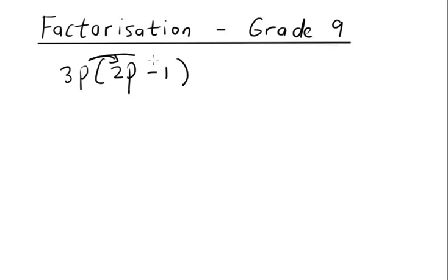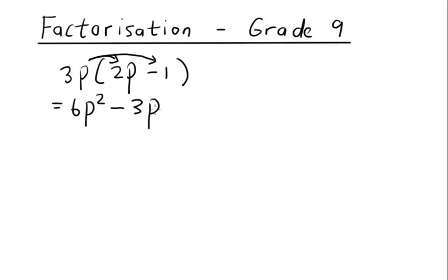So we're going to say 3p multiplied by 2p, which is equal to 6p squared. Remember there's an invisible 1 there, so we add that up and then you've got 3p multiplied by negative 1. A positive multiplied by a negative gives us a negative — 3 multiplied by 1 equals 3, and then we're left with p. So this is simplifying. In terms of algebraic language it's important for us to understand that — that's like us doing the sum.